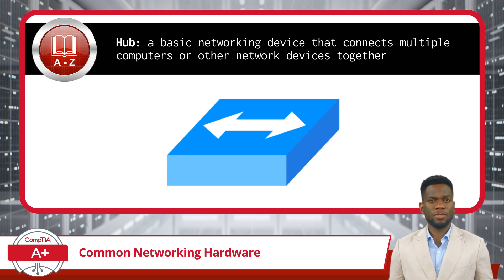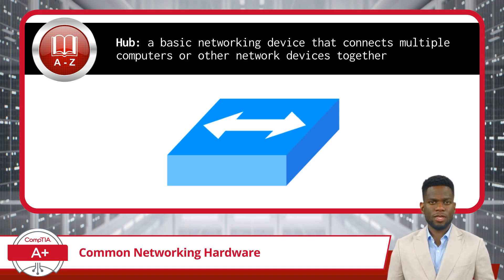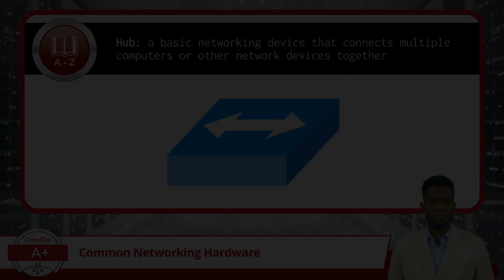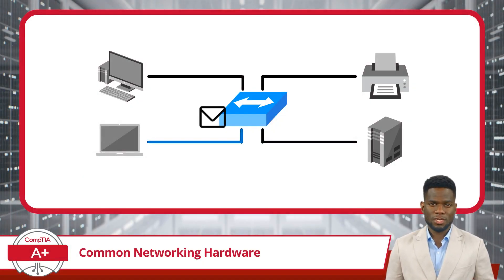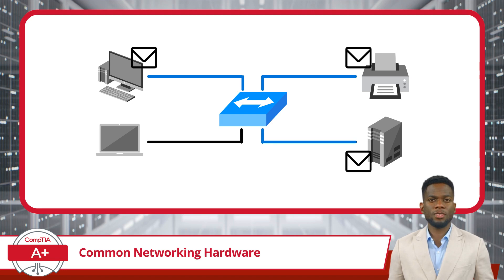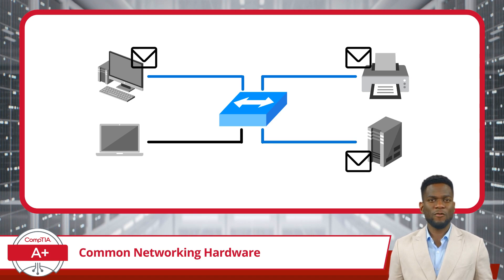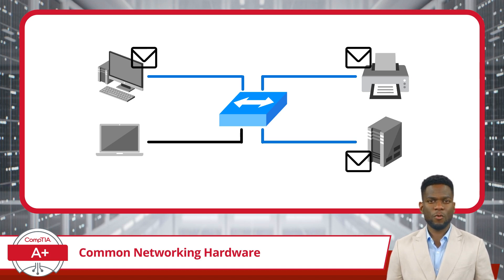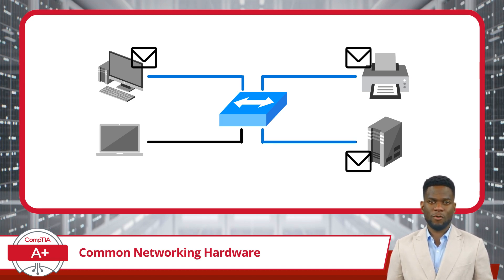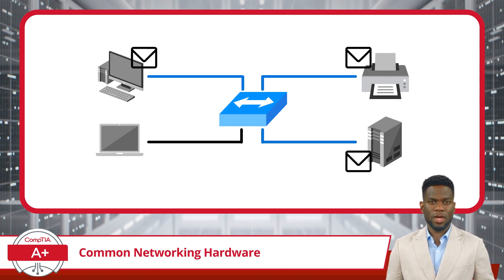To kick things off, I will start with a rather antiquated or outdated device: the Network Hub. The Hub is a basic networking device that connects multiple computers or other network devices together. When a Hub receives data from one device, it broadcasts the data to all other connected devices. You can imagine a Hub as a speaker making a public broadcast announcement, sending the same message to everyone in a room. Without distinguishing which device the data is meant for, the Hub is inherently less efficient and less secure compared to more advanced devices like network switches.